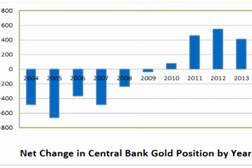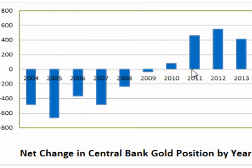As I have discussed in other videos, prior to the financial crisis, central banks were net gold sellers. When the financial crisis hit, central banks switched from net gold sellers to net gold buyers, and central banks have been purchasing a consistent amount of gold almost every quarter since.